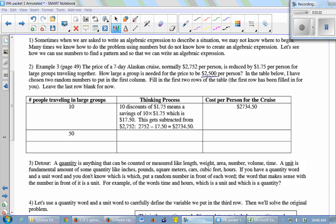So if we want to bring it down to $2,500 per person, 10 people is not enough. Let's try it with 50 people. If we had 50 people, we'd get 50 discounts of $1.75. So I'm going to have to do 50 times $1.75, and that comes out to $87.50.